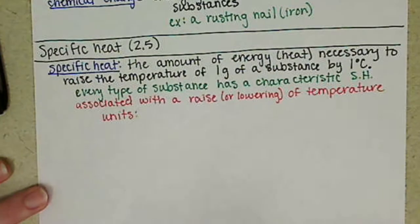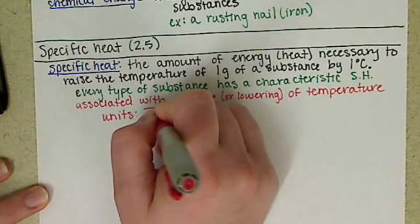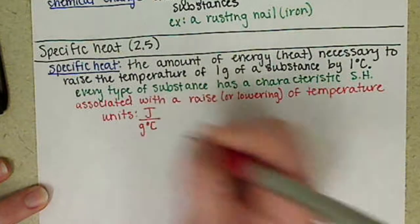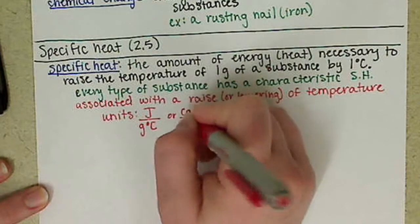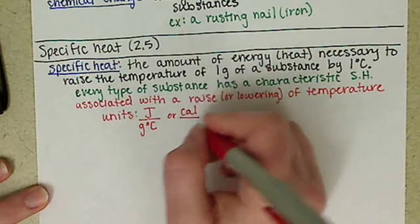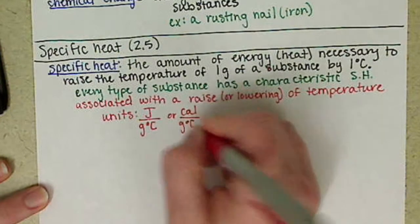The units of specific heat, we have joules per gram per degree Celsius. Or, again, since we're talking about energies, we can talk about calories per gram per degree Celsius.